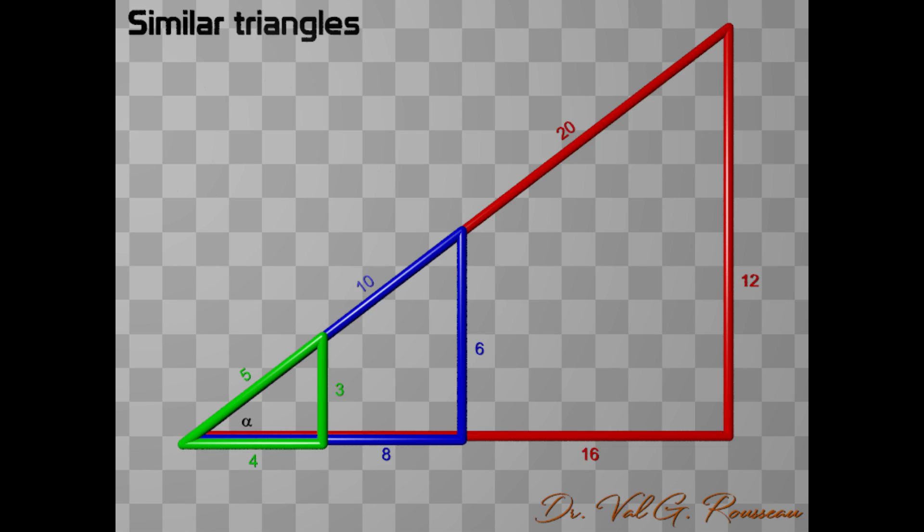Let us check this explicitly. For the green triangle, the ratio between opposite and hypotenuse is 3 over 5. For the blue triangle, this ratio is 6 over 10, which simplifies to 3 over 5, while for the red triangle, this ratio is 12 over 20, which again simplifies to 3 over 5.